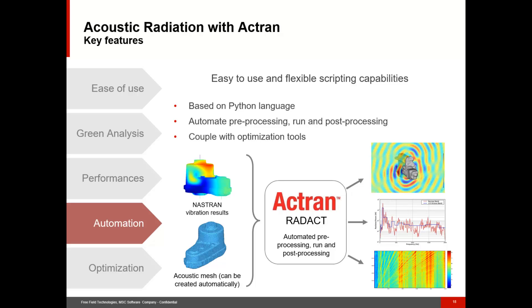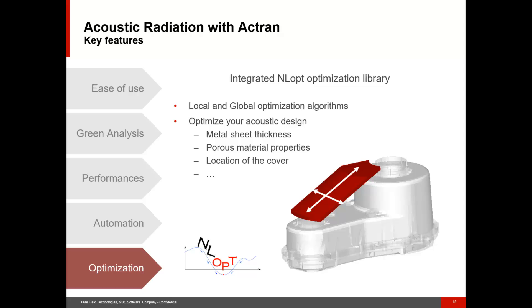With Actron's scripting capabilities, it is very easy to integrate acoustic radiation calculation into your existing calculation process. It also enables including Actron calculations in an optimization program. Optimization is an important aspect when performing numerical simulations, and many companies wanting to achieve spectacular acoustic enhancements are using optimization to come up with better engineered parts. For acoustics, optimization can be used to retrieve material properties of foam, to better design a cover by modifying its shape, changing some materials, or adjusting its location — and there are many more applications.